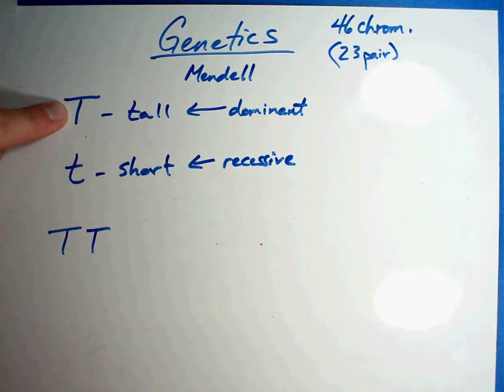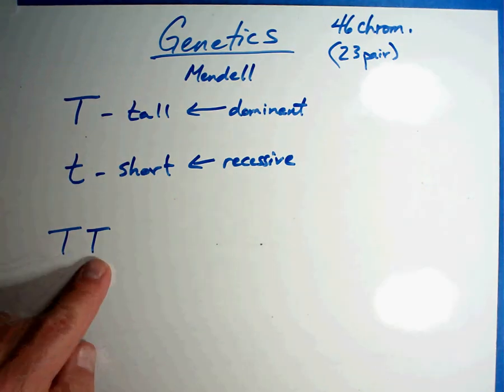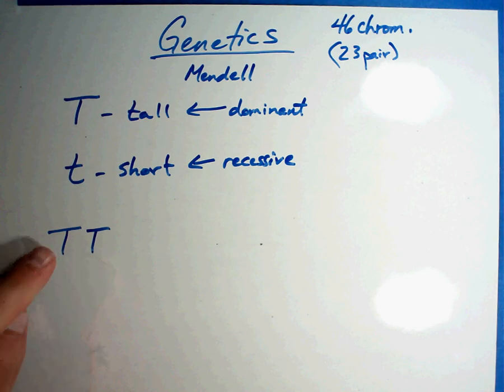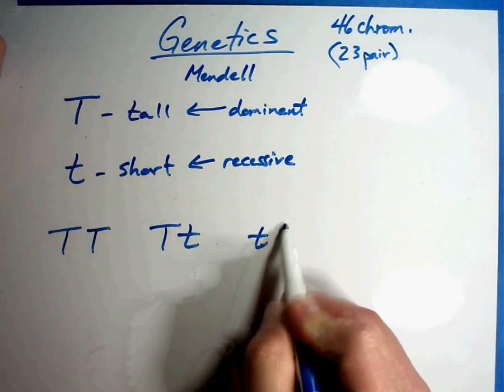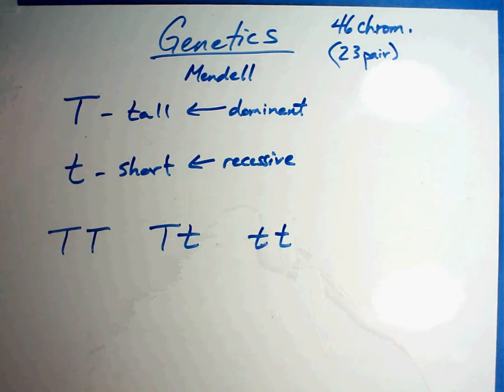Combinations that can happen: Big T, big T. Realize you get one gene from your mom and one from your dad. It works in plants that way too. One plant gives one gene, one gives another. So you can have big T, big T. You can have big T, little t. Or you can have little t, little t. These are possible combinations of how you can put these two letters together.